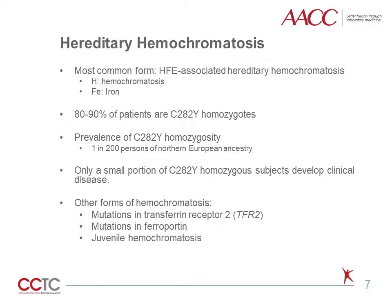Other forms of hemochromatosis include mutations in transferrin receptor 2 or TFR2 gene, mutations in ferroportin which cause excessive ferroportin-mediated iron transport, as well as juvenile hemochromatosis, which has an earlier presentation compared with classical hereditary hemochromatosis.